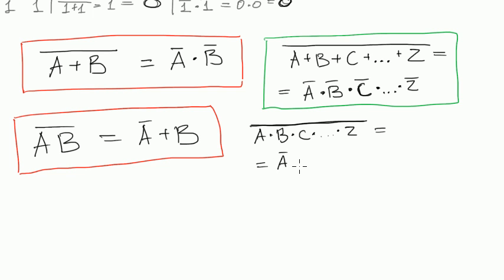Will equal to the same variables but negated each one of them and summed like this. A negated plus B negated plus C negated plus something plus Z negated.